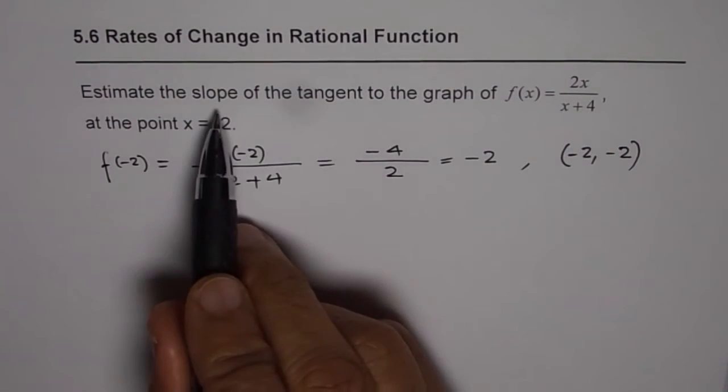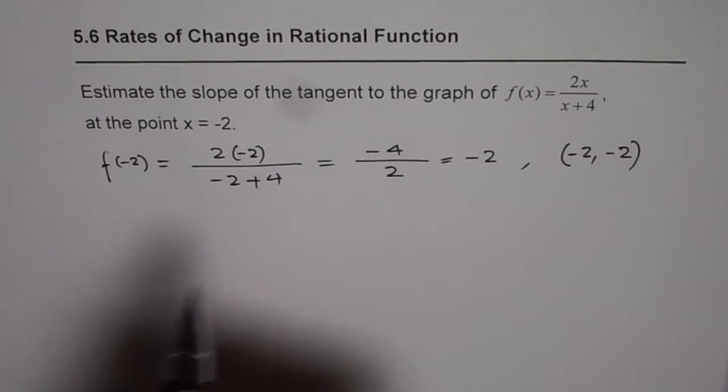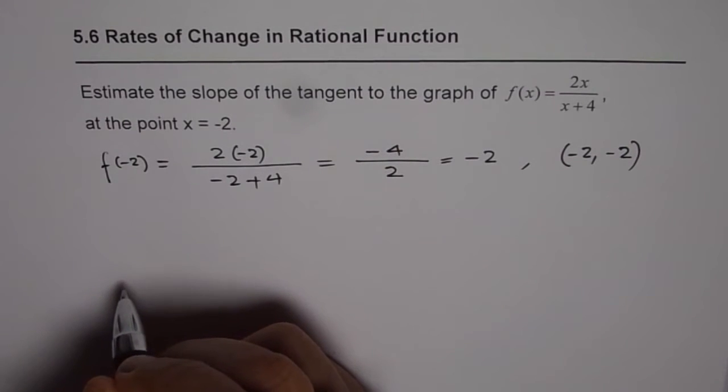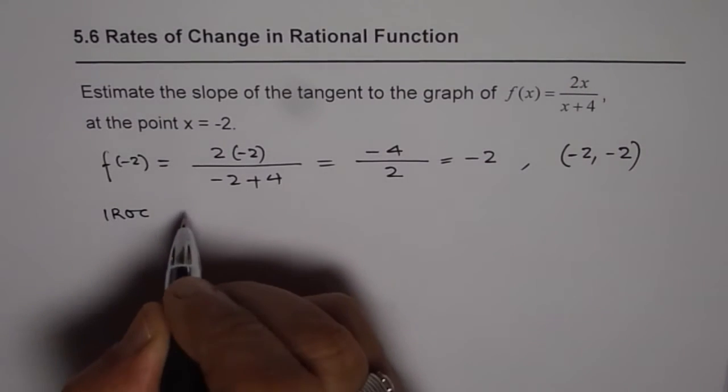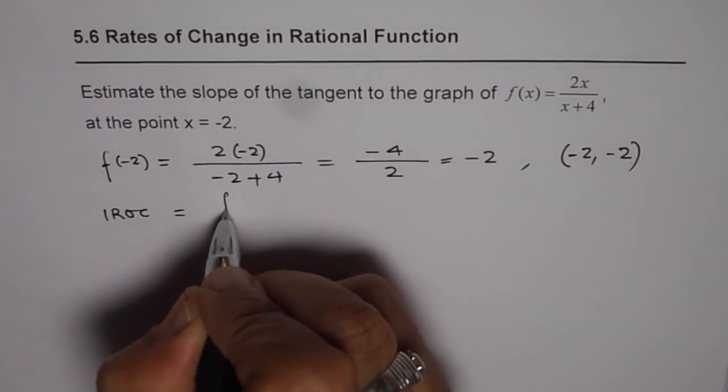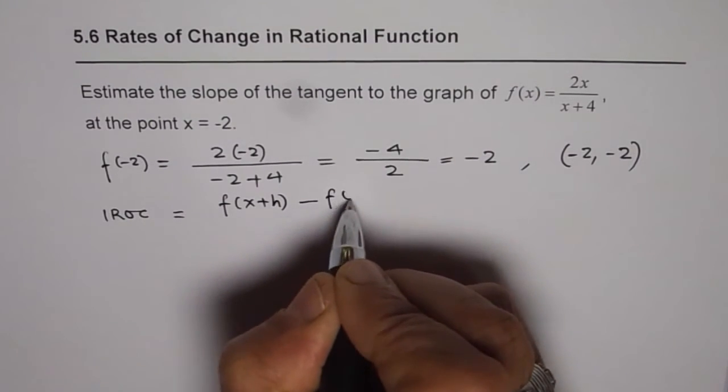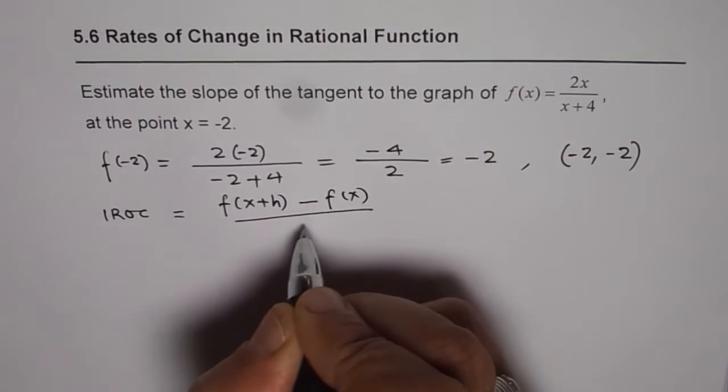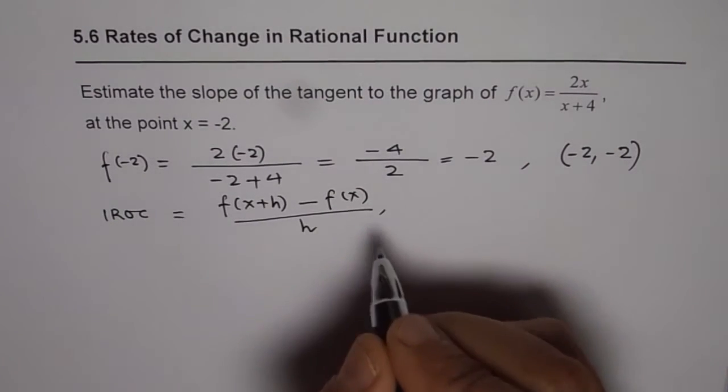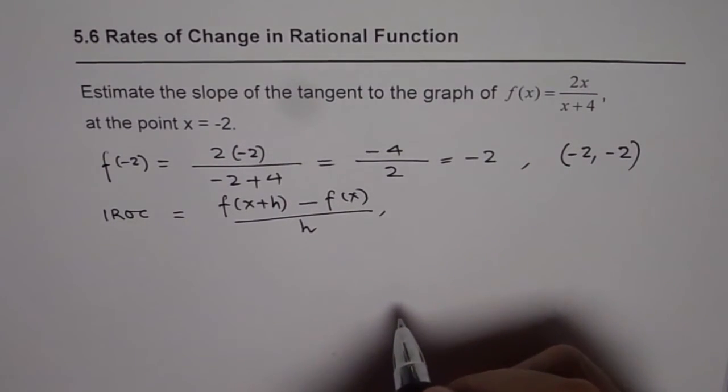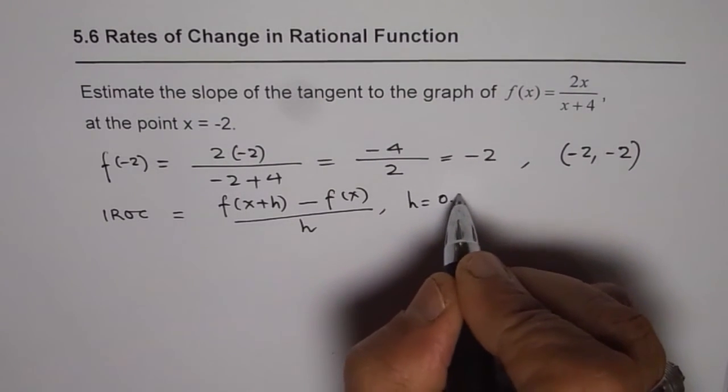Now, if we need to find instantaneous rate of change at this point, then we can use the difference quotient formula, which says instantaneous rate of change for a function is [f(x+h) - f(x)]/h, where h is very small.